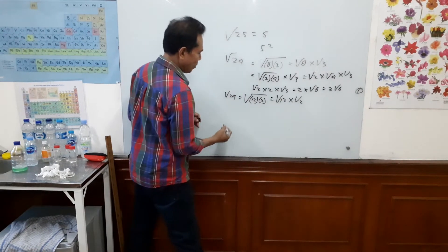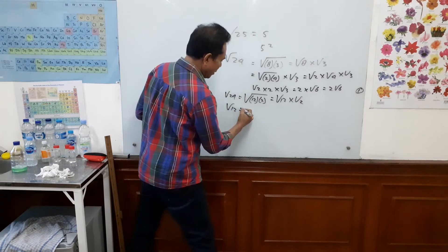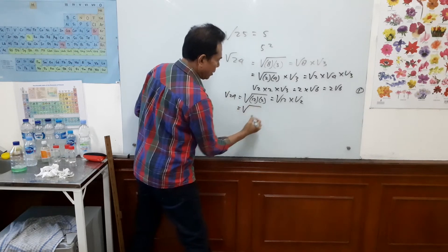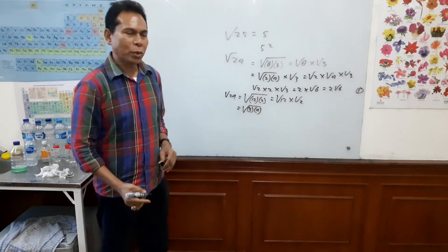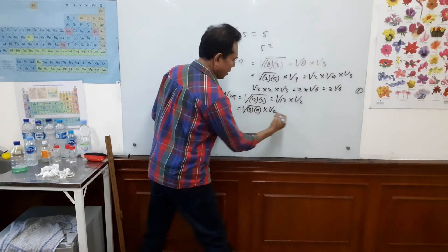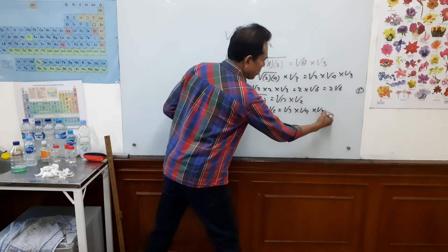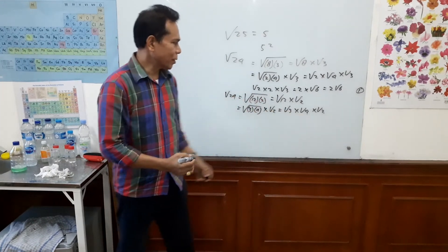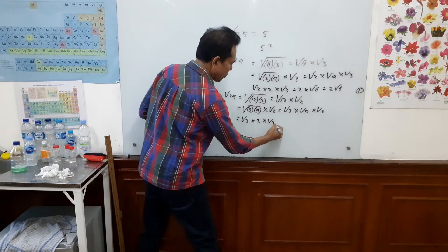We bring this out: square root 12 becomes square root 3 times square root 4 times square root 2. From here we see we can easily solve square root 4 — square root 4 is 2. So it is 2 times square root 3 times square root 2.